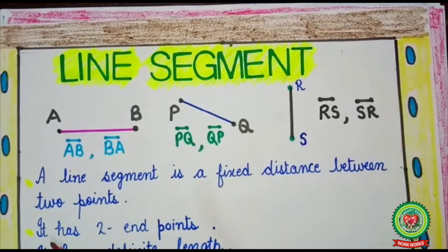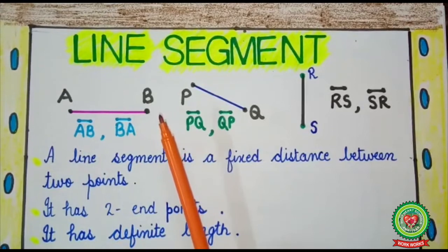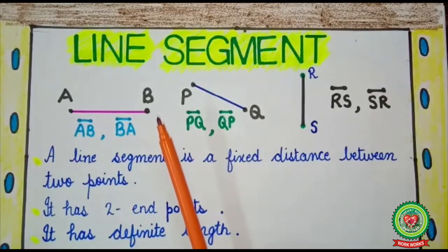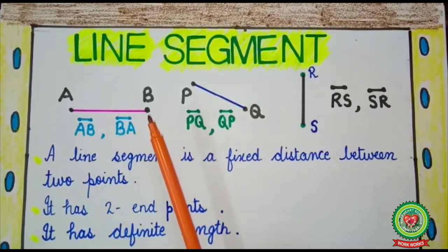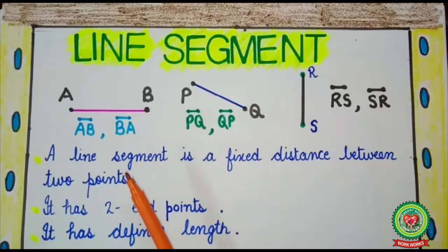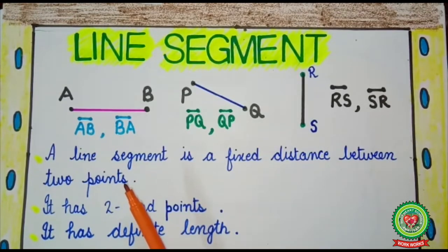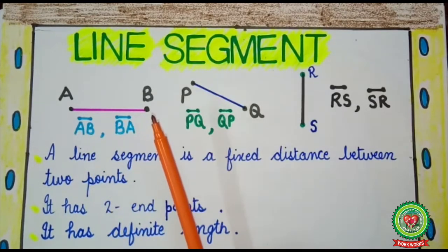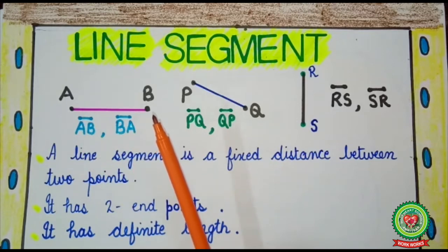Now, line segment. Consider any two points A and B. Join point A and point B — when you join two points, it makes a line segment. Therefore, a line segment is a fixed distance between two points. You can observe that it has two end points, so a line segment has two end points. It lies between two fixed points, therefore it has a definite length.